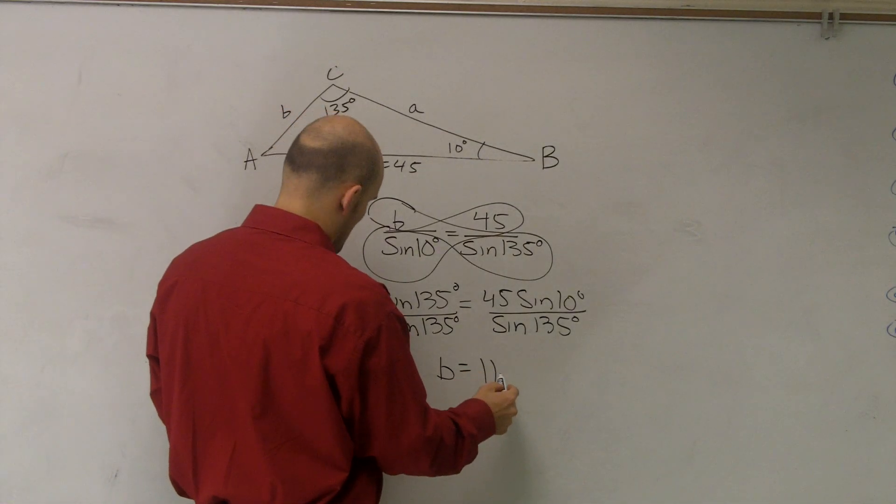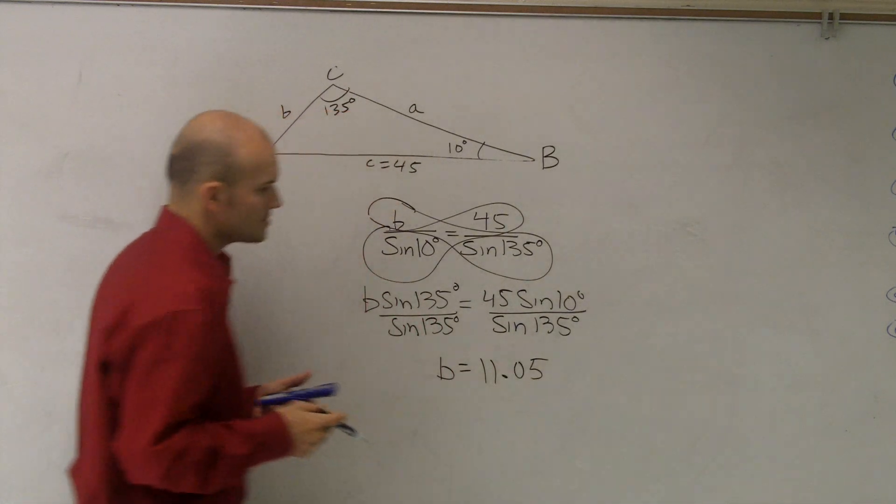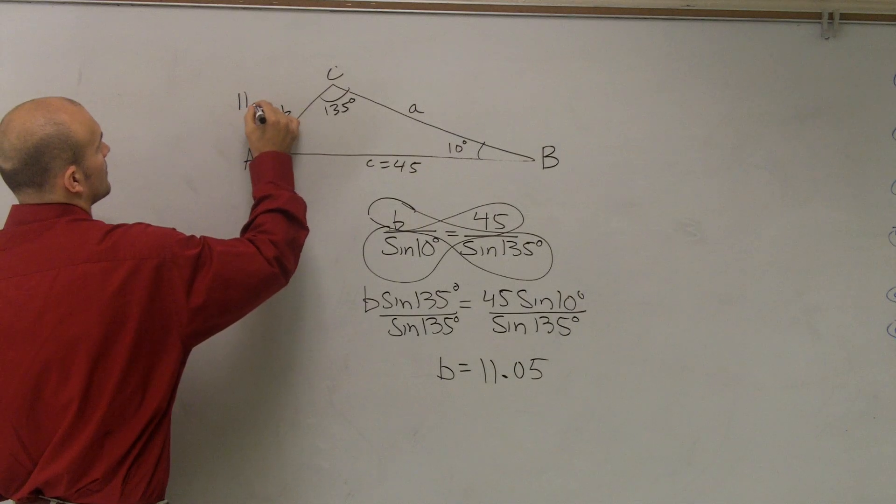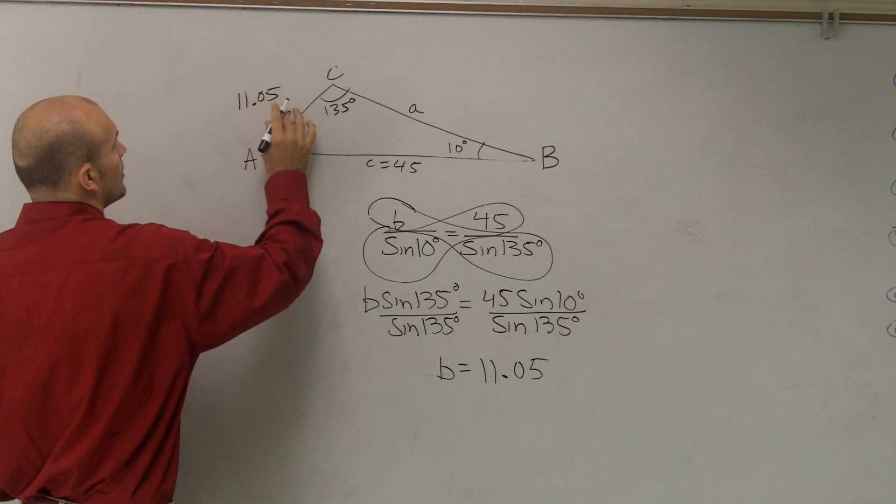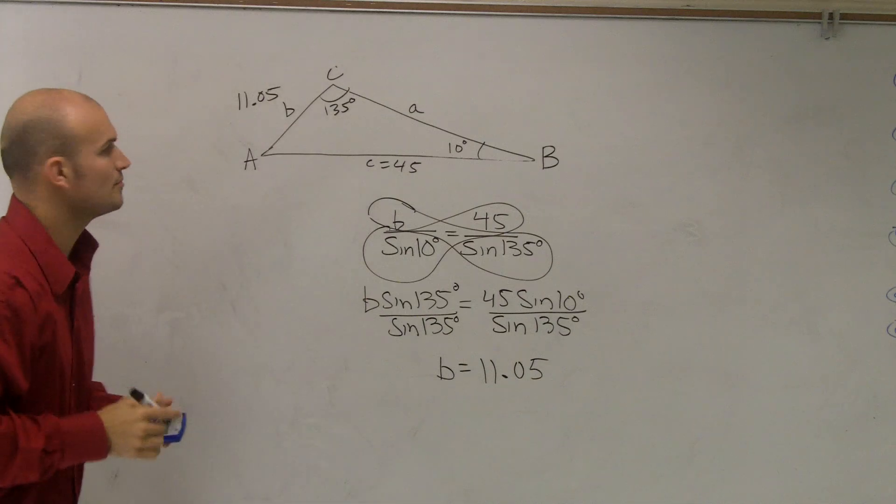And my answer is going to be 11.05. For these problems, I'd like you, unless otherwise noted, to round to the hundredth. So I have 11.05. Well, now we know what B is, right? Yes, sir. So that's 11.05.